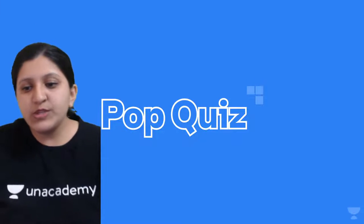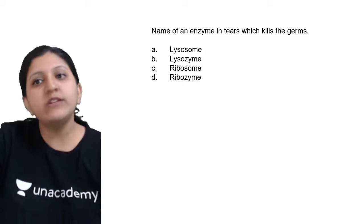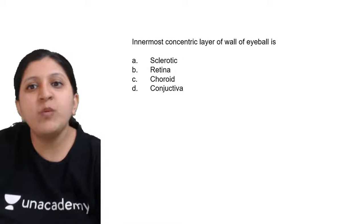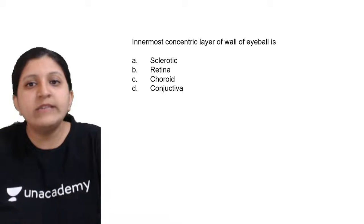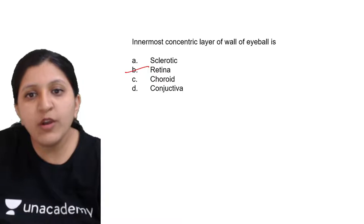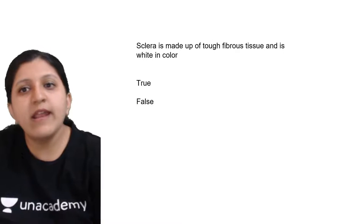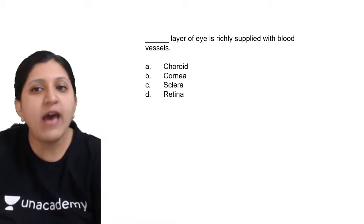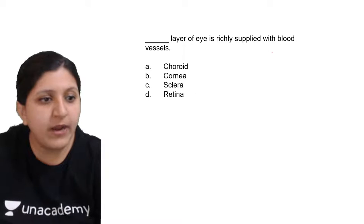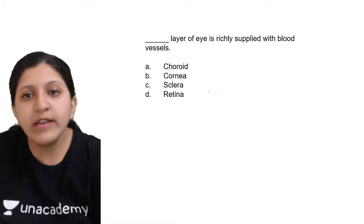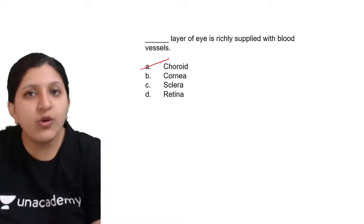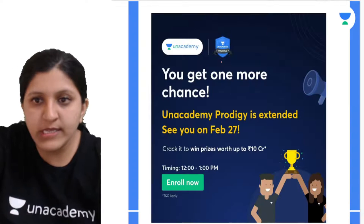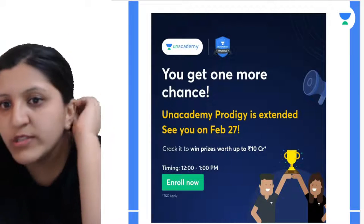Let's go through some quick questions. The enzyme in tears which can kill germs is lysozyme. The innermost concentric layer of the wall of the eyeball is the retina; the outer is sclerotic and the middle is choroid. The sclera is made of tough fibrous tissue and is white in color. The layer richly supplied with blood vessels is the choroid layer, which is vascular.